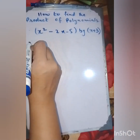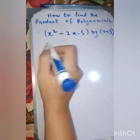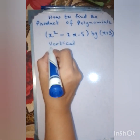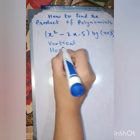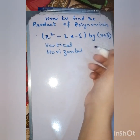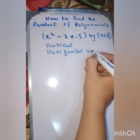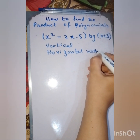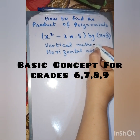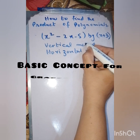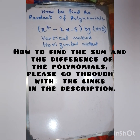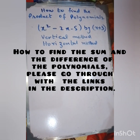We have two methods to find the product. The first one is the vertical method and the second one is the horizontal method. We are going to apply both methods simultaneously, one by one. To learn about addition and subtraction of polynomials, you must go through the previous videos already uploaded.